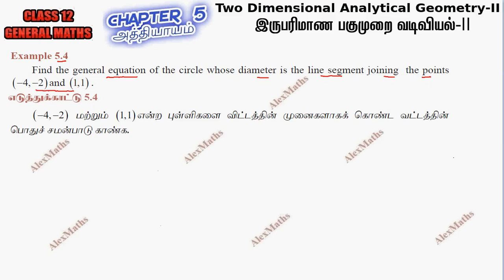If we look at the diagram, we have a circle. This is a diameter. Suppose in the diameter, the end points we have are A, B, and we have coordinates x1, y1, and x2, y2.